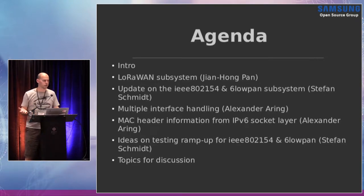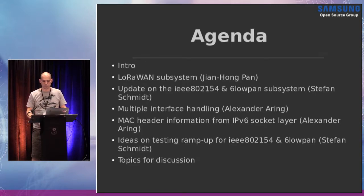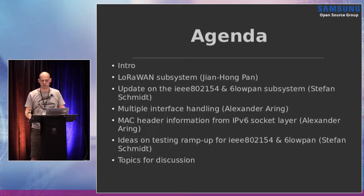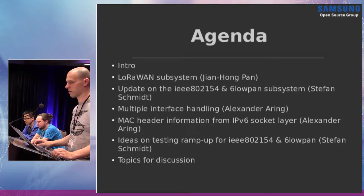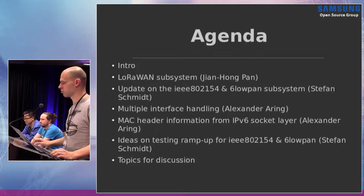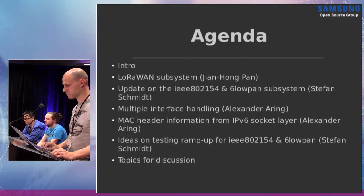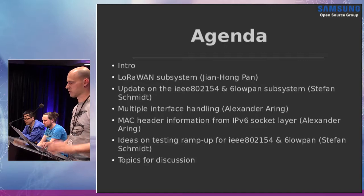The agenda would be a short introduction, then Jianhong will talk about the LoRaWAN subsystem he's working on and planning to upstream. I'll give an overview of what's been happening in 15.4 and 6LoWPAN, the subsystems I maintain with Alexander. Then Alex will talk about multiple interface handling and exposing MAC header information through IPv6 headers and the socket layer. We also had a huge regression in IPv6 fragmentation handling for our subsystem, so I've been thinking about what we can and should do about testing. This whole session should be around one and a half hours.